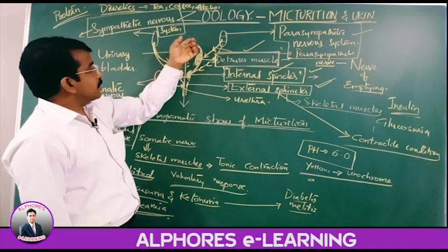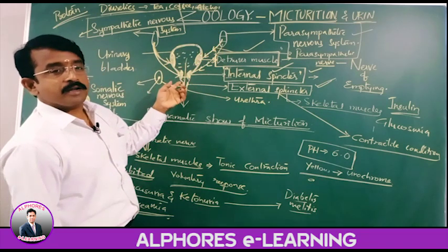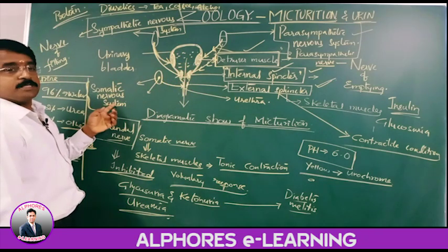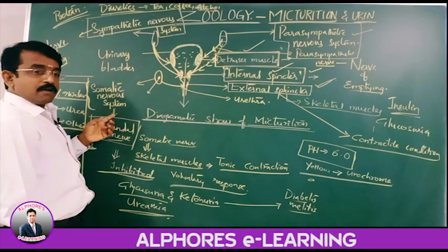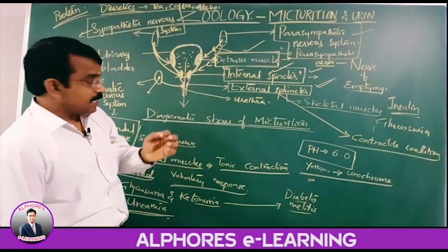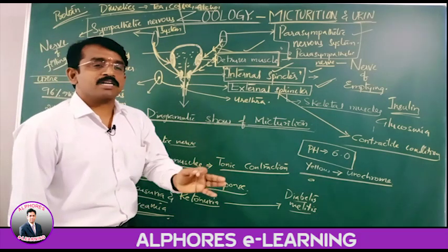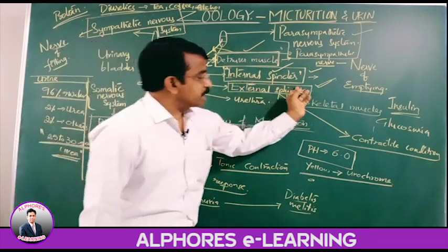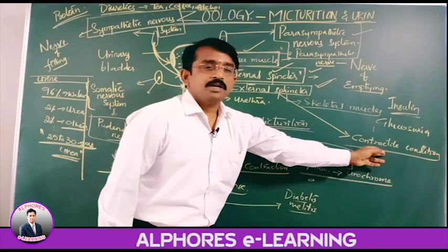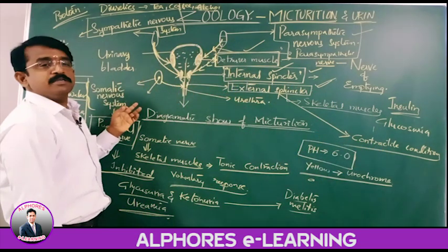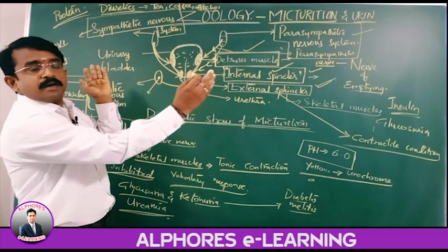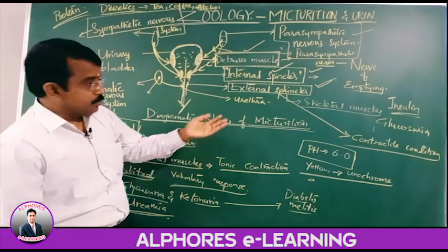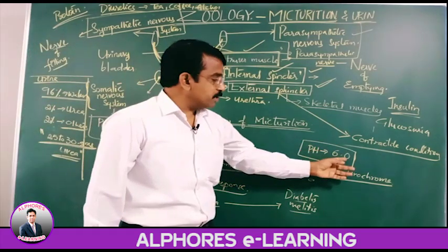This causes the constriction of the urinary bladder wall, so urine starts moving. Then the somatic nervous system, through its somatic nerve, causes the skeletal muscles to contract for a long period, resulting in the external sphincter. So always the external sphincter is in a contractile condition; during micturition time it is inhibited, so the external sphincter relaxes and urine is sent out — that is micturition.